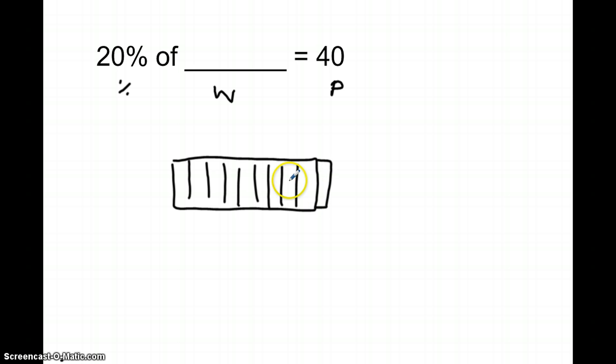Okay, 1, 2, 3, 4, 5, 6, 7, 8, 9, and 10. Each piece is worth 10%, so this is 10%, 20%, 30%, 40%, 50%, 60, 70, 80, 90, and a hundred percent.